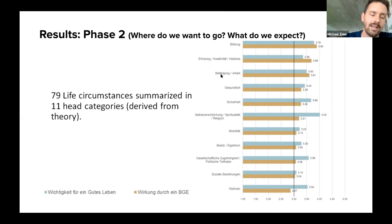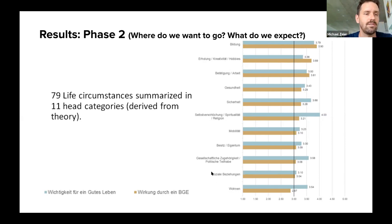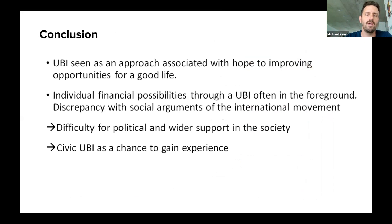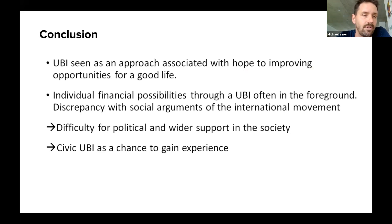Looking down at the lower end of the rankings: living conditions, social relationships, social cohesion in society, and political participation were ranked really low. This brings me to the conclusion that a lot of people think UBI is an approach that would help them improve individual opportunities for a good life.